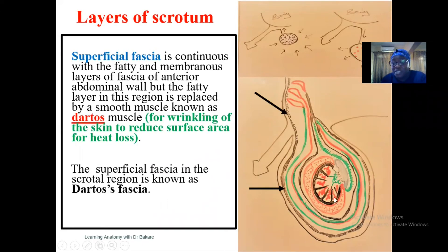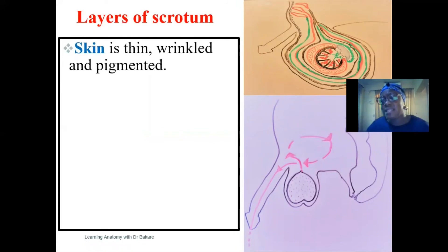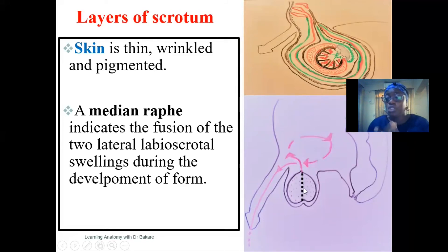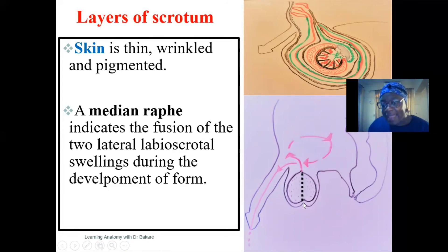The superficial fascia in this region is also referred to as the dartos fascia, because the fibers of the dartos muscle are found on it. The last layer is the skin, the most external part of the scrotum. This skin is thin, rugose, and pigmented. The rugosity results from the dartos muscle contracting during temperature regulation. The median raphe is a longitudinal ridge seen along the surface of the scrotum, resulting from the embryonic fusion of the two lateral labioscrotal swellings during fetal development.